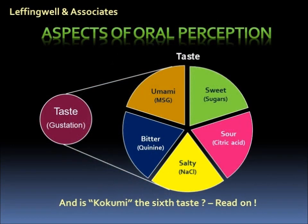For many years, scientists believed there were only four basic tastes: sweet, sour, salty, and bitter. The fifth taste, umami, was added to the taste wheel in about 2000 following the discovery of taste receptors specific to L-glutamate and certain ribonucleotides with which the Japanese term of umami was associated.